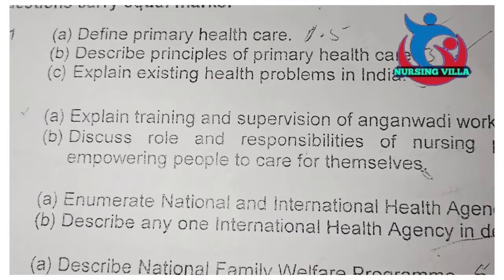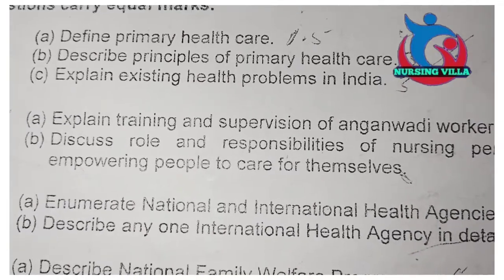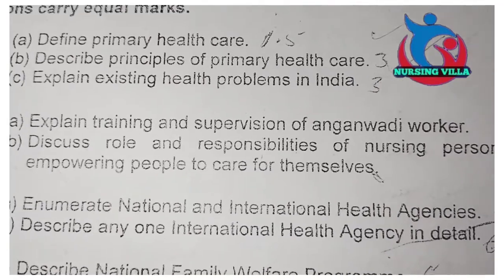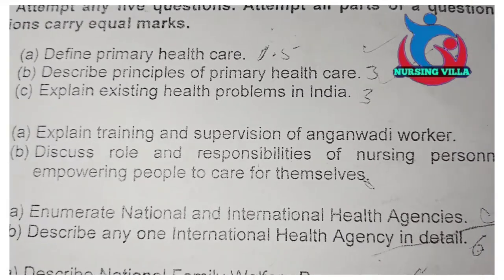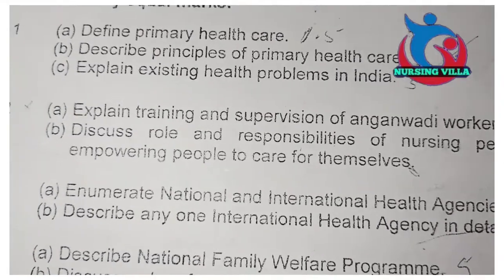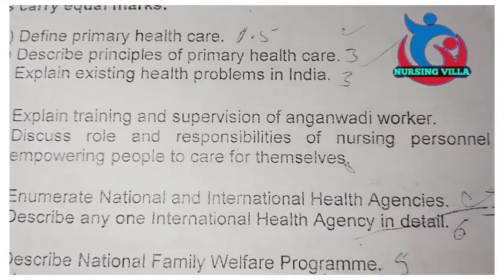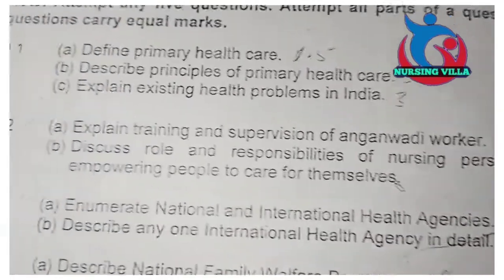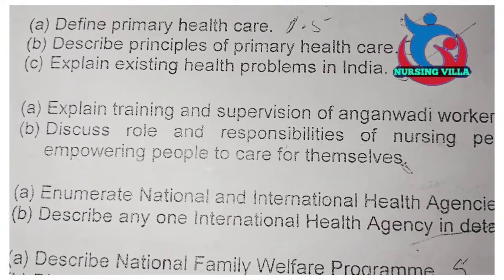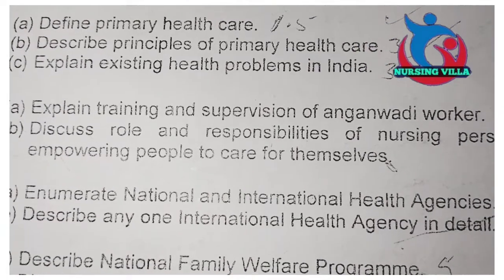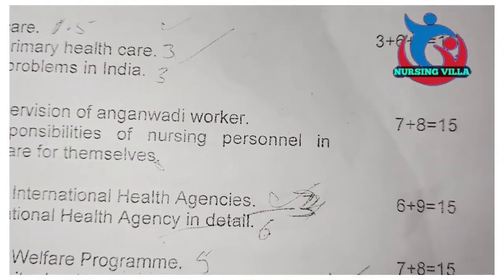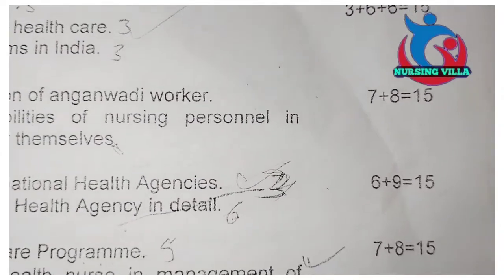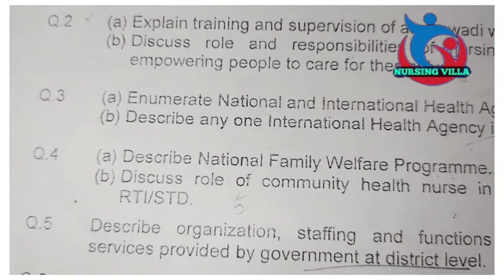The second question has two parts, A and B. Question A: explain training and supervision of Anganwadi worker. Question B: discuss role and responsibility of nursing personnel in empowering people to care for themselves. This contains 7 plus 8, equal to 15 marks.